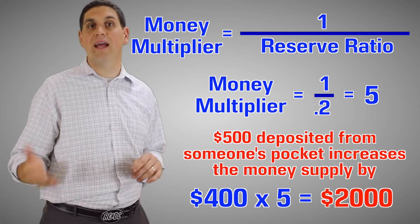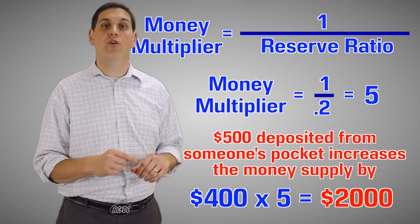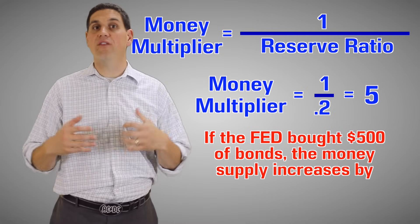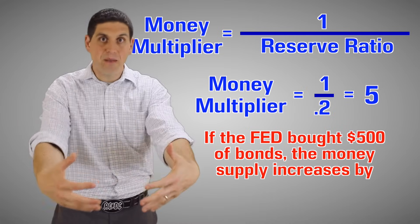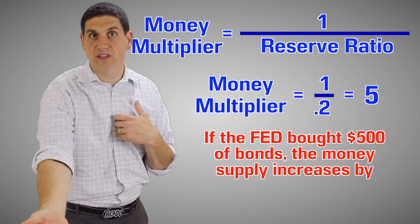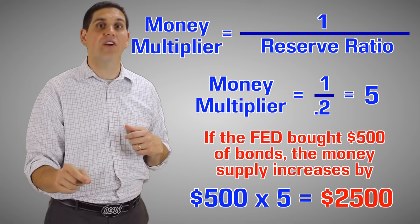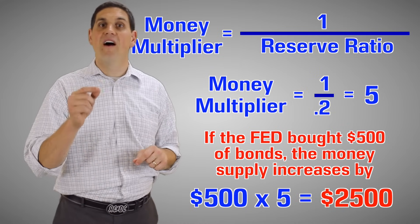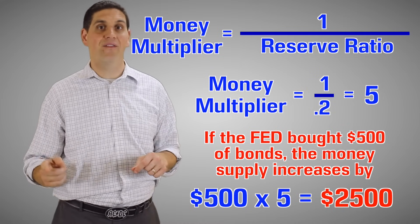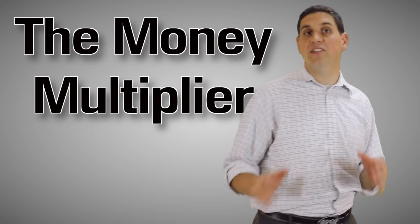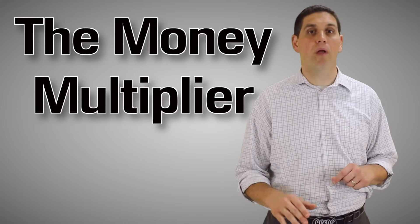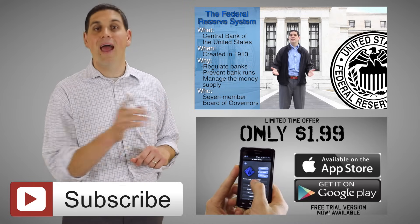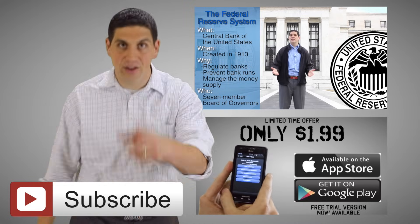Don't confuse this with the Fed buying bonds. For example, if the Fed bought $500 worth of bonds — putting $500 into the system — that whole $500 is new money. So in that situation, the new money created would be $500 times 5, which would be $2,500. This is tricky, but it's just like the spending multiplier from fiscal policy. Make sure to take a look at my other videos and my review apps for the AP Economics Test.